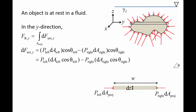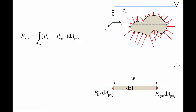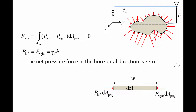Let's redraw the sliver with an equivalent picture containing the projected area. dF net becomes the pressure on the left side times the projected area minus the pressure on the right side times the projected area. We can factor out dA proj, then plug in the expression for dF net into the integral. The pressure on the left side is equal to the pressure on the right side because they are at the same depth. This means the net pressure force in the horizontal direction is zero. In other words, fluid pressure forces do not push an object sideways in a static fluid.